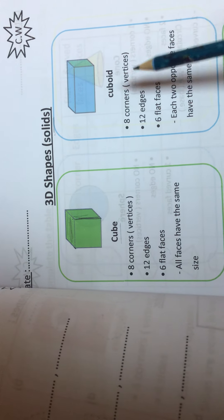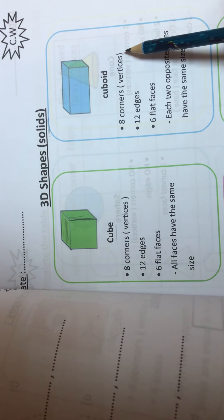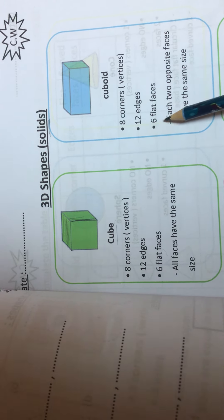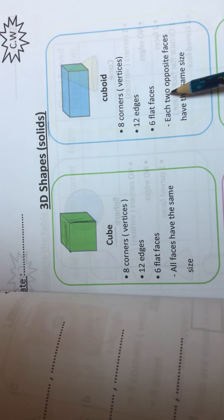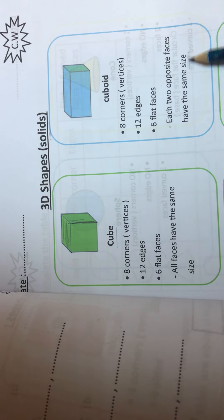Second shape: cuboid. Cuboid has 8 corners or vertices, 12 edges, 6 flat faces. Each 2 opposite faces have the same size.